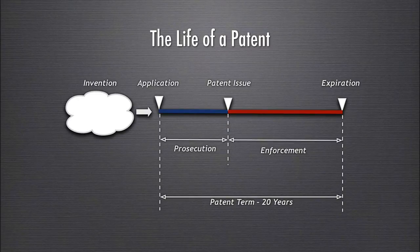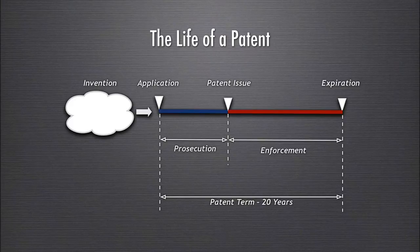An overview of the life of a patent: an invention is created by one or more real persons who decide it's patentable and apply for a patent. There's a prosecution phase where it's filed with the patent office — right now that's around 30 to 35 months of prosecution time. This is the back and forth between the patent applicant and the examiner about whether the invention meets the standards for patentability.